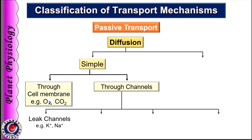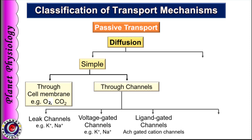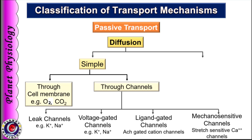For example, diffusion of potassium or sodium through leak channels. Or it can be through voltage-gated channels, like diffusion of sodium through voltage-gated sodium channels. It can be through ligand-gated channels, for example sodium diffusion through acetylcholine-gated channels, or diffusion can also take place through mechanosensitive channels, for example calcium diffusion through stretch-sensitive channels.